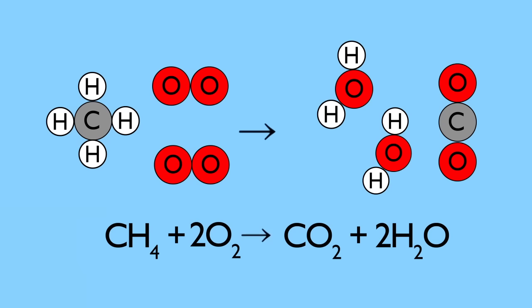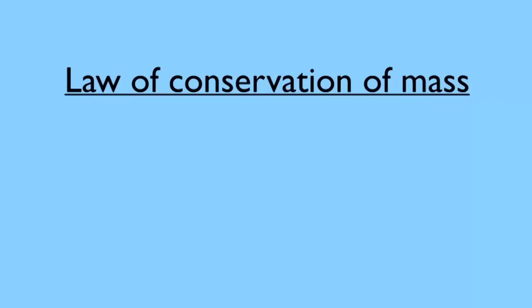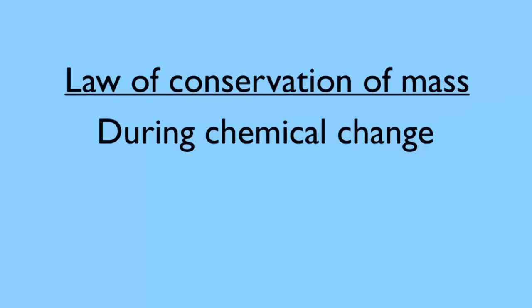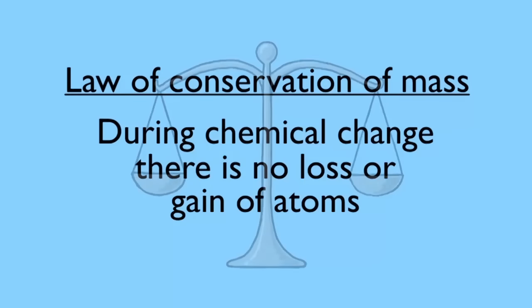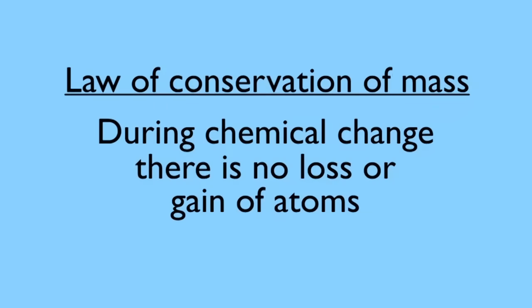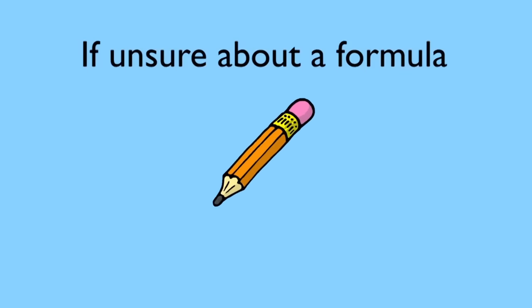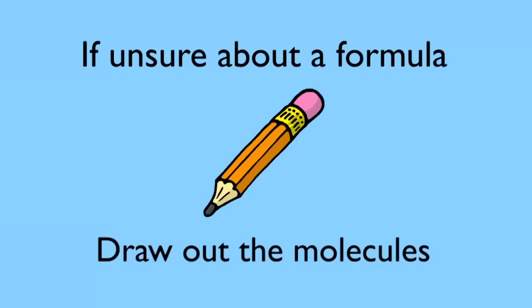In summary, the law of conservation of mass is simply saying that during chemical change there is no loss or gain of atoms. It is for this reason that we always balance chemical equations. Until you are really familiar with using formulae, it's easier to draw out the molecules as models.